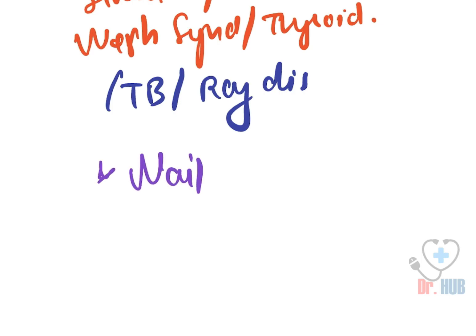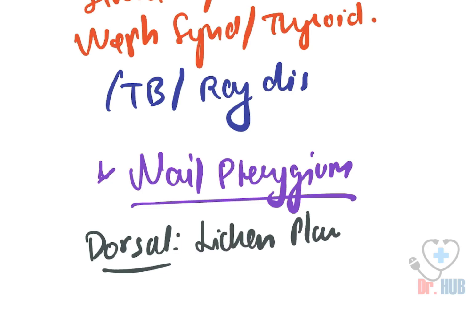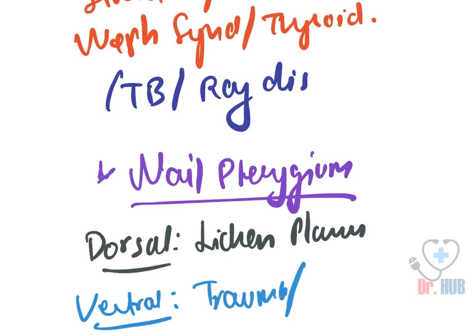Next we move on to nail pterygium. Dorsal nail pterygium is seen in lichen planus. Ventral nail pterygium indicates trauma, systemic sclerosis, Raynaud's phenomenon, and lupus erythematosus.